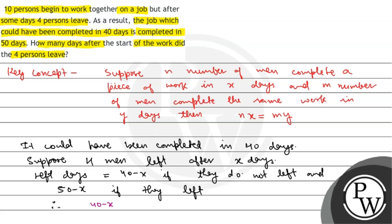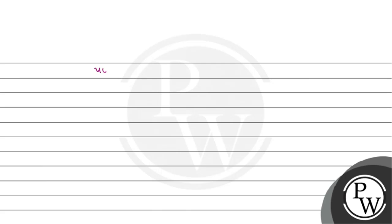...400 minus 10x equals 10x plus 6 times 50 minus x. So we will see that 4x is equal to 100.